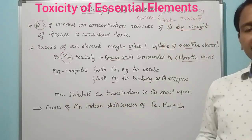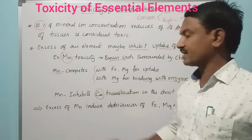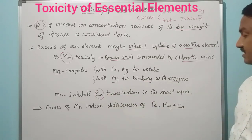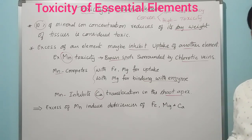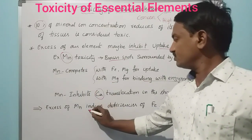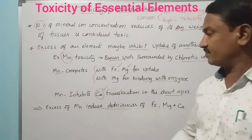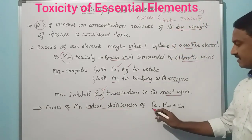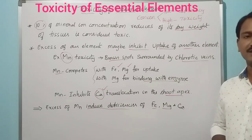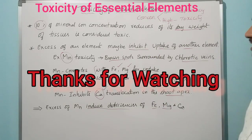Excess manganese also inhibits calcium translocation in the shoot apex. As a result, excess manganese induces deficiency of iron, deficiency of magnesium, and deficiency of calcium in plants. So excess manganese ultimately leads to multiple elemental deficiencies, which is the overall toxic effect of this essential element.